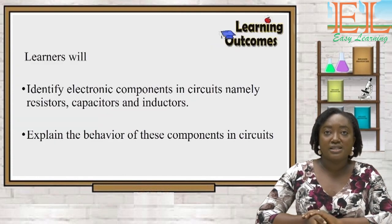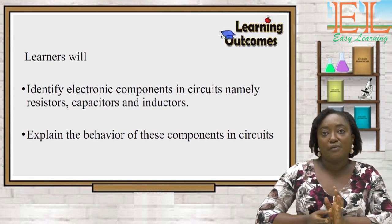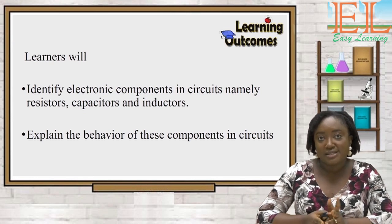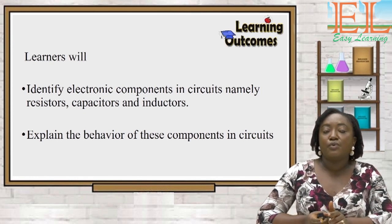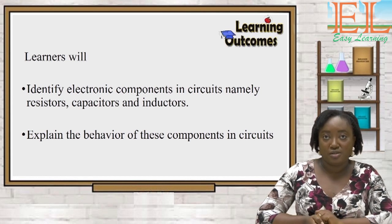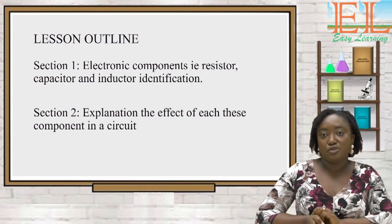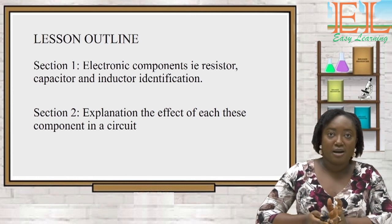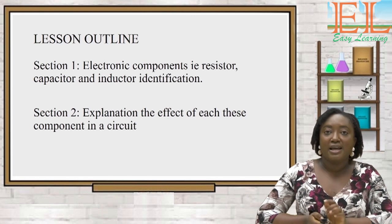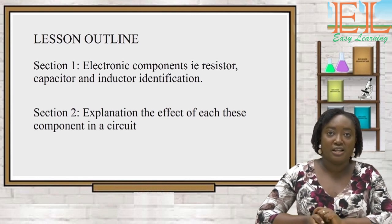In today's lesson we are learning to identify electronic components in circuits, namely resistors, capacitors, and inductors. We will also explain the behavior of these components in electronic circuits. We will start off by identifying the electronic components — resistors, capacitors, and inductors — and then later explain the effects of these components in an electronic circuit.